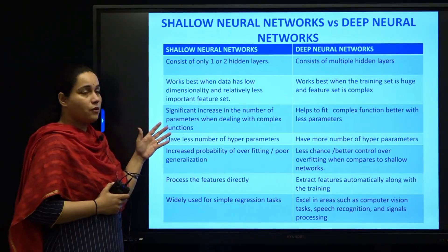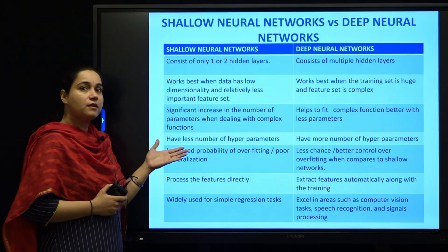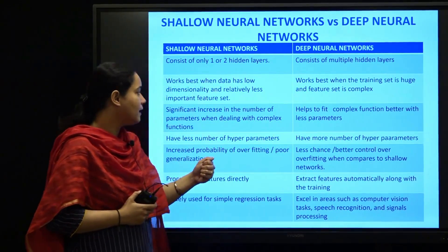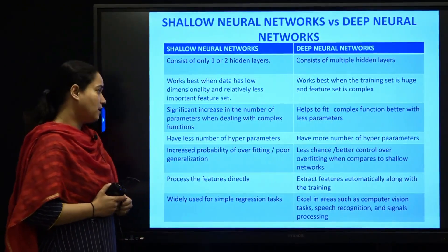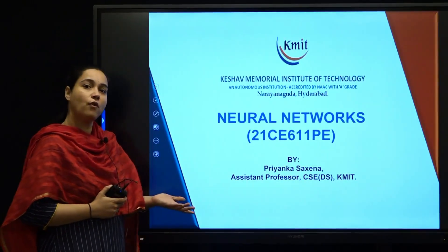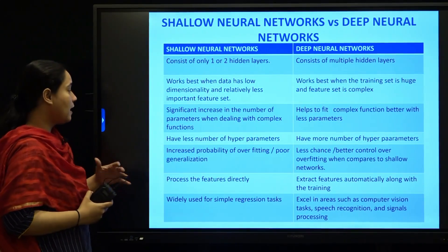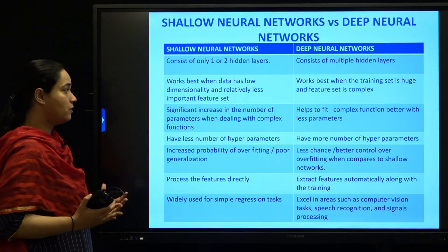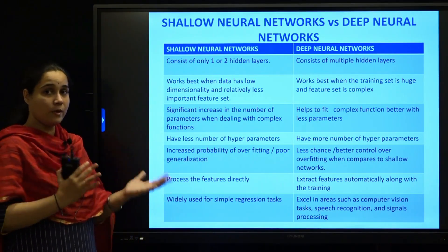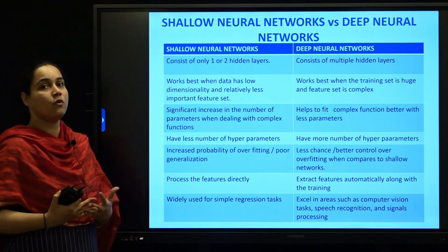When it comes to hyperparameters like the learning rate, you have very few hyperparameters in a shallow neural network and more hyperparameters in a deep neural network. When you have fewer hyperparameters in a shallow neural network, there are more chances of overfitting — that is, increased probability of poor generalization. Deep neural networks, having more hyperparameters, give better control over overfitting.